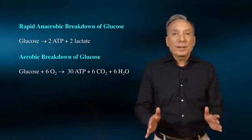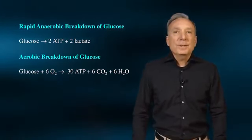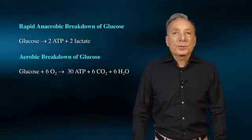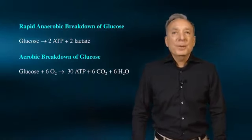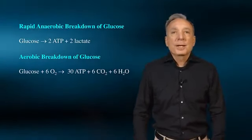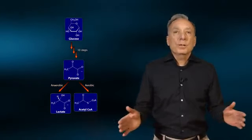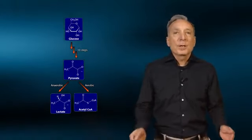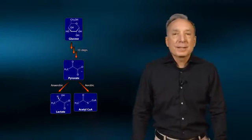Thus, the aerobic breakdown of these units in the mitochondria allows for 15 times more ATP production per unit. As a result of this greater ATP production, the muscles can afford to use carbohydrates at a much slower rate. It is worth noting that whether glucose is broken down anaerobically or aerobically, the initial 10 steps in the pathway of glycolysis are identical.